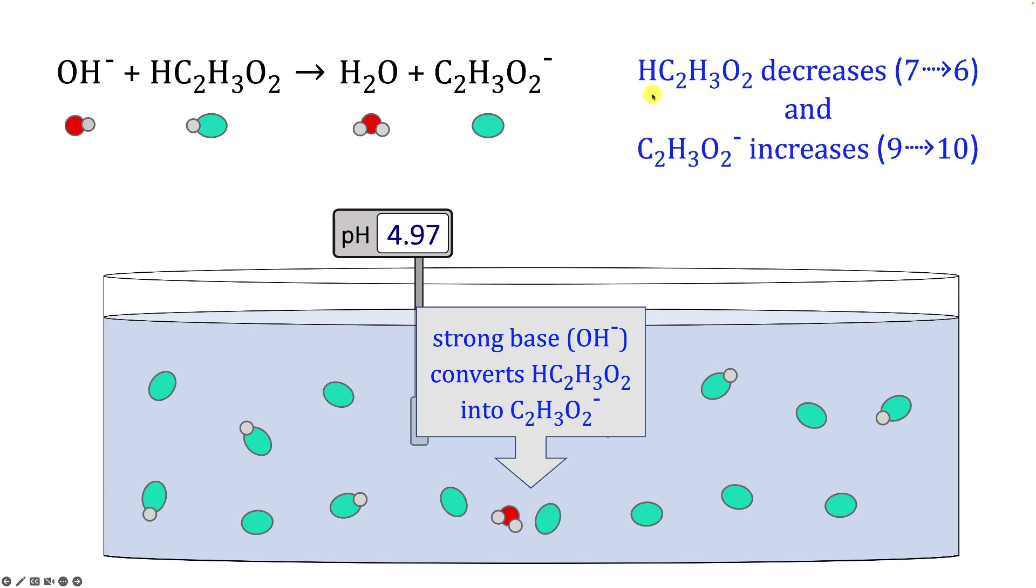The amount of acetic acid decreases from 7 to 6 in this case. The amount of acetate increases from 9 to 10. Once again, the water that's formed in the reaction will disappear into the background with the rest of the water. And we note that the pH increases again from 4.86 to 4.97 in this case. And the volume increases a bit as well.